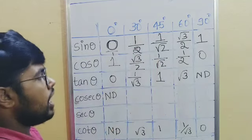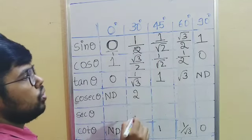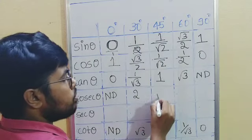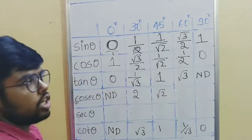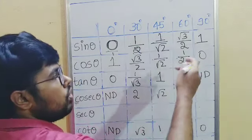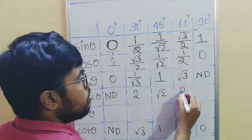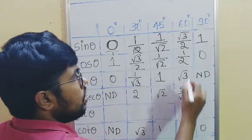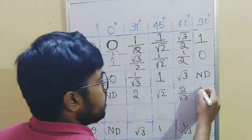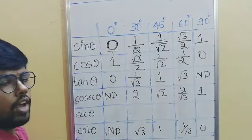One by root two, when you inverse it, becomes root two by one, which is root two. Root three by two, when you reverse it, becomes two by root three. One by one is again one itself. After writing the cosec values, just